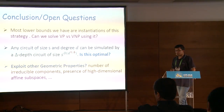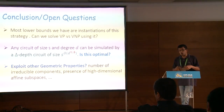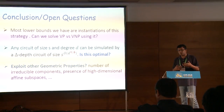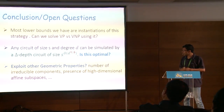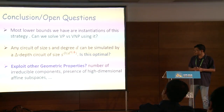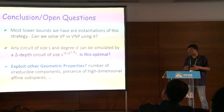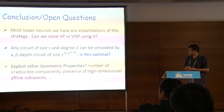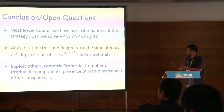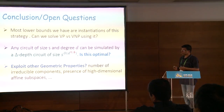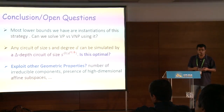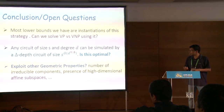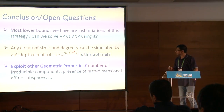There are a huge number of other geometric properties one could potentially exploit to prove lower bounds — for example, the number of irreducible components of a variety, how many affine subspaces are inside a variety, and so on. We don't understand whether these geometric properties can be effectively exploited for lower bound purposes. It seems we have just gotten started.